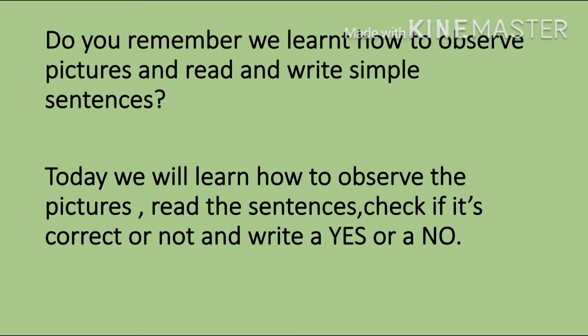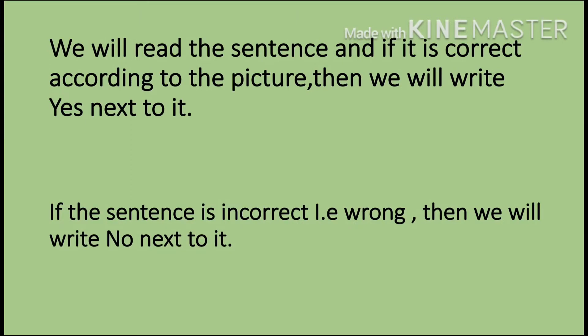Do you remember we learnt how to observe pictures and read and write simple sentences? Today we will learn how to observe the pictures, read the sentences, check if it's correct or not, and write a Yes or a No. We will read the sentence and if it is correct according to the picture, we will write Yes next to it. Remember, Yes is written starting with a capital Y and No is also written with a capital N. Now let's see a few pictures to understand better.